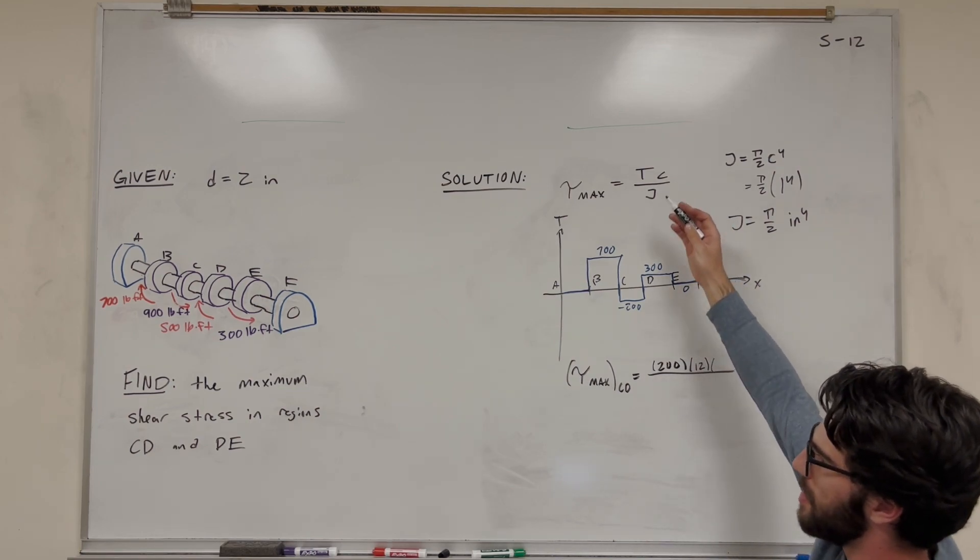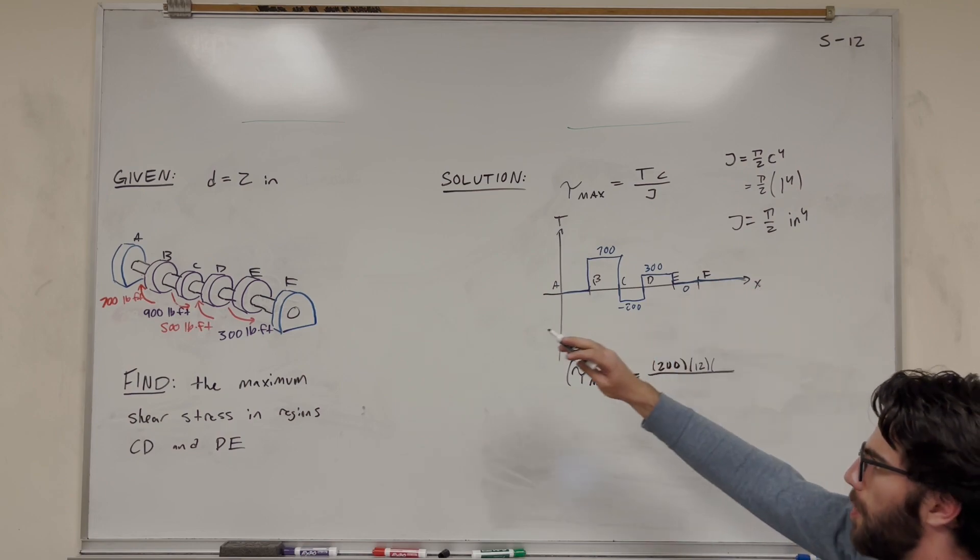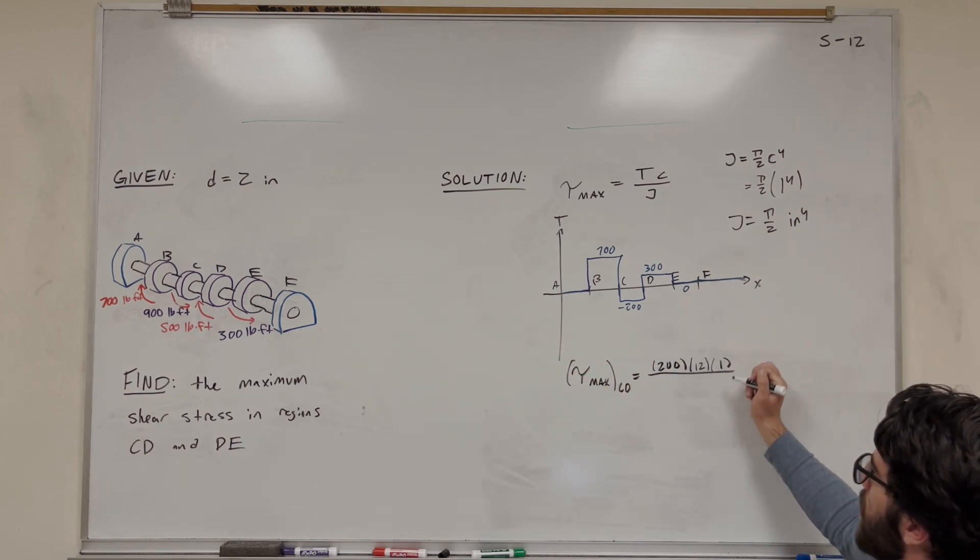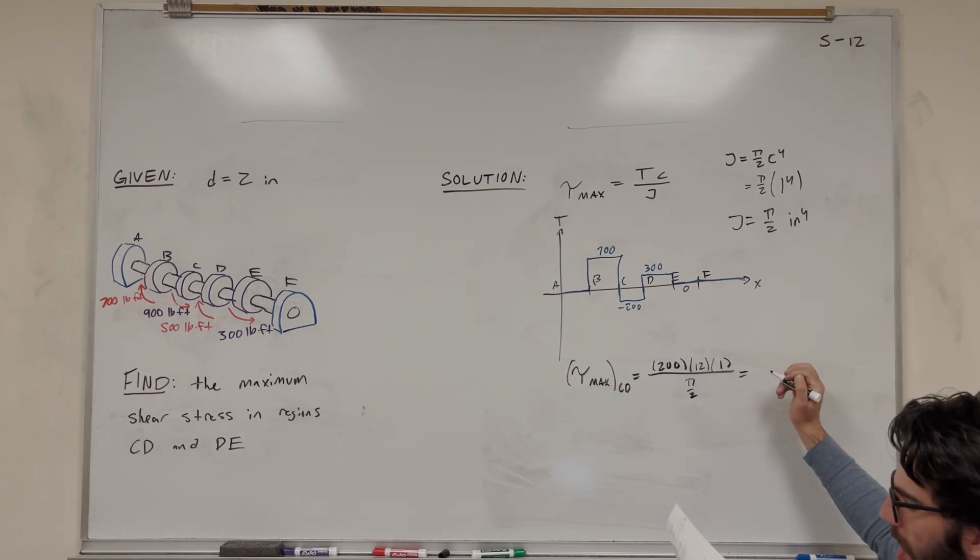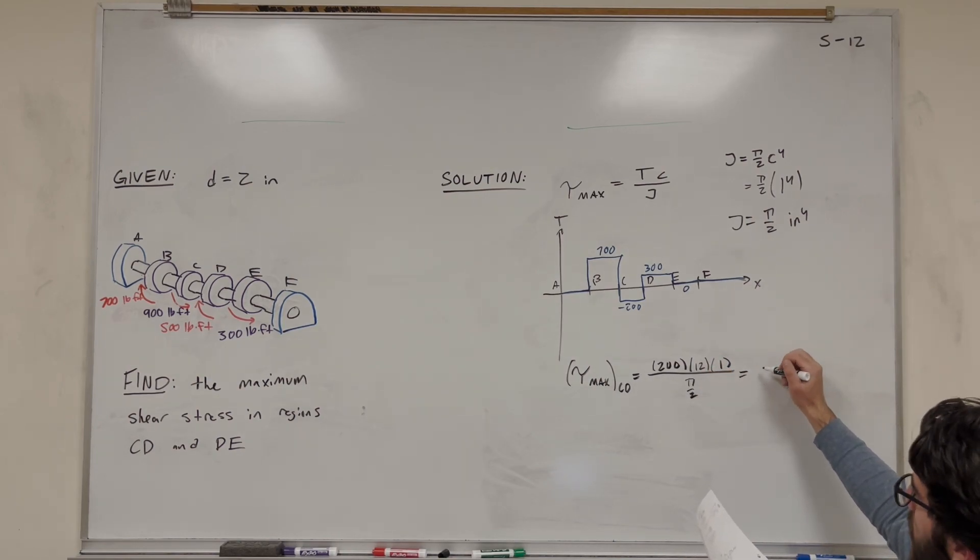Then C, this is our radius. So our radius is 1 inch, so we can just put in a 1 here. And then J is what we found to be pi over 2. Plug all of this in, you get that it is 1530 psi.